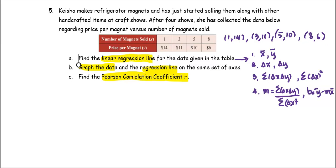For r, the Pearson correlation coefficient, we're going to need to use the formula: r equals the summation of delta x delta y divided by the square root of summation delta x squared times the square root of summation of delta y squared.